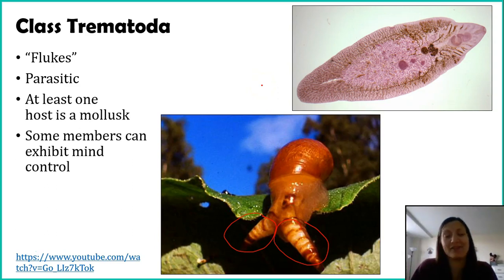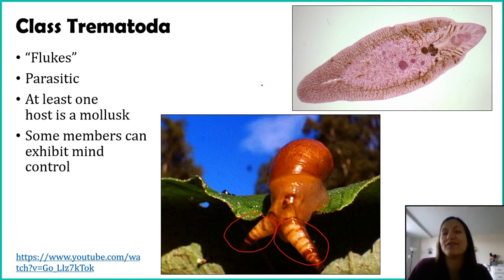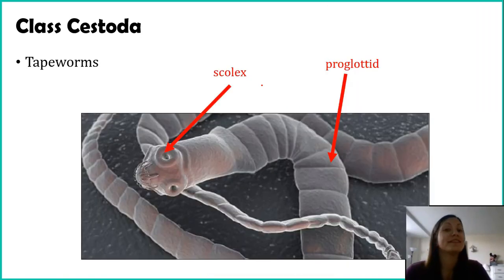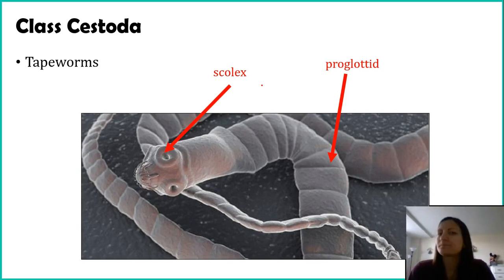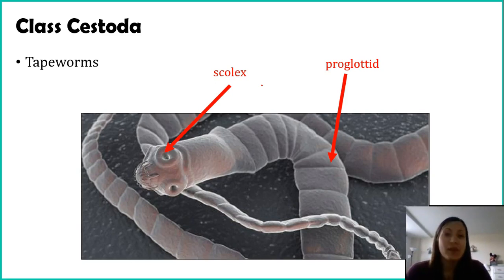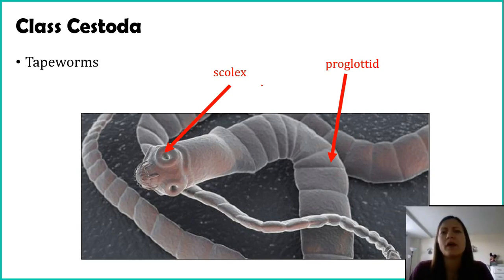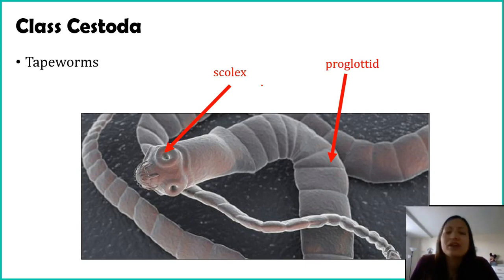We have one more class left, and it's a class you're familiar with even if you haven't heard the name before. Class Cestoda — all of our tapeworms. Humans do get tapeworms, but the tapeworms that infect humans are not the only tapeworms out there. There are a lot of different species that infect all sorts of organisms, mainly mammals, but some are not infecting mammals. We will talk about the human tapeworm — not to freak you out, but to make sure you're staying safe with the food you're eating.